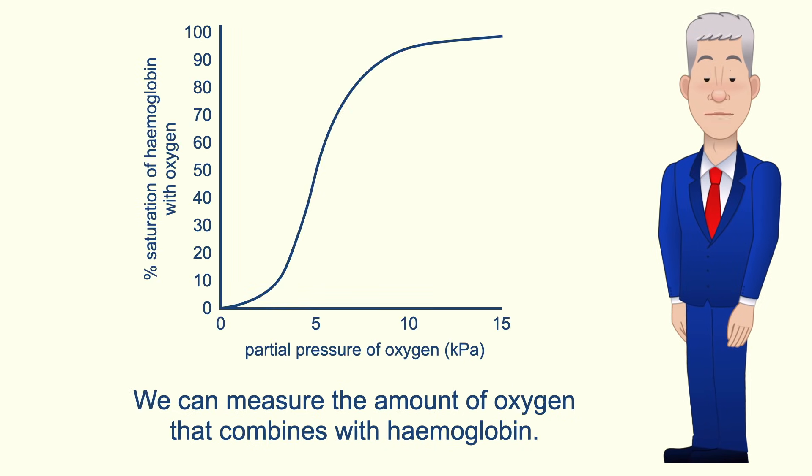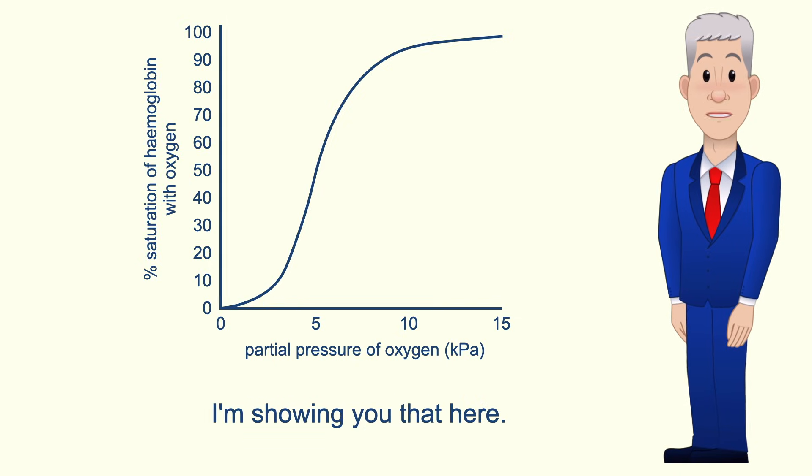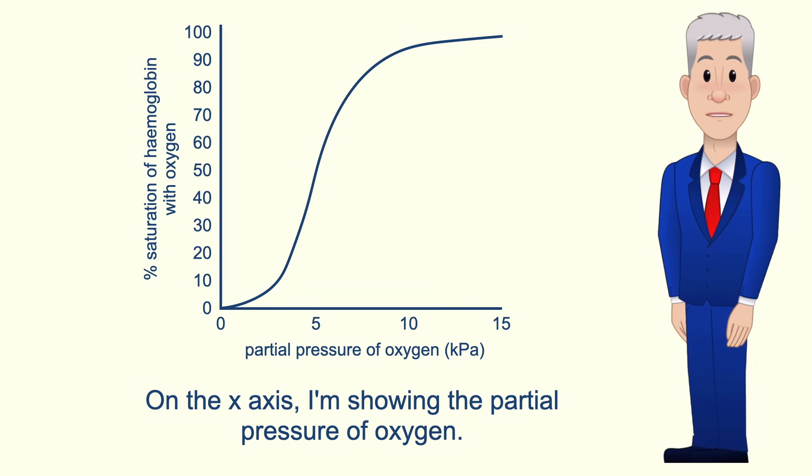Now we can measure the amount of oxygen that combines with haemoglobin. This is called the oxygen dissociation curve and I'm showing you that here. On the y-axis I'm showing the percentage saturation of haemoglobin with oxygen and on the x-axis I'm showing the partial pressure of oxygen.